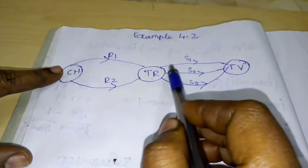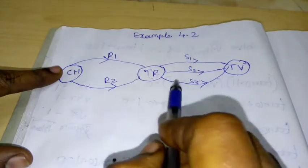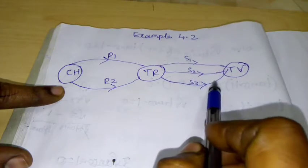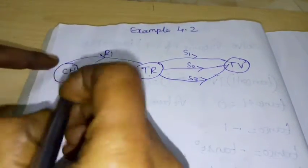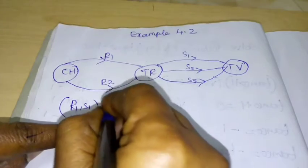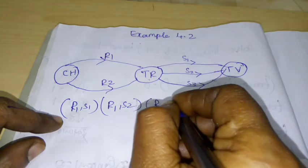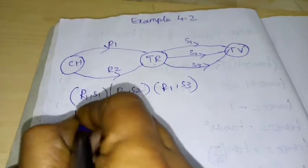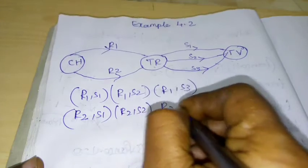So, the possible combinations are: R1-S1, R1-S2, R1-S3, R2-S1, R2-S2, R2-S3. That gives us R1-S1, R1-S2, R1-S3, R2-S1, R2-S2, R2-S3.